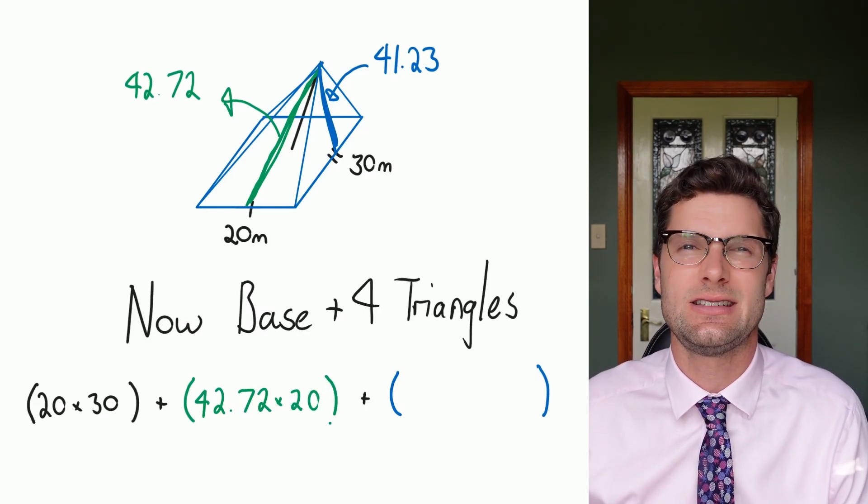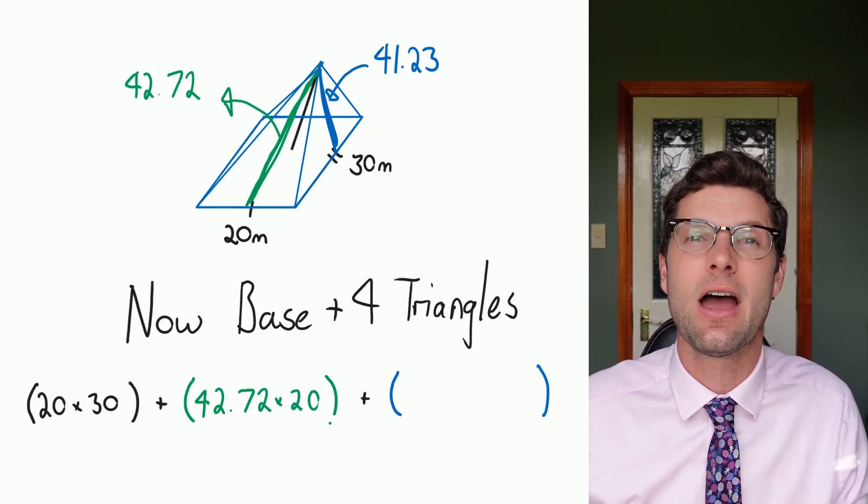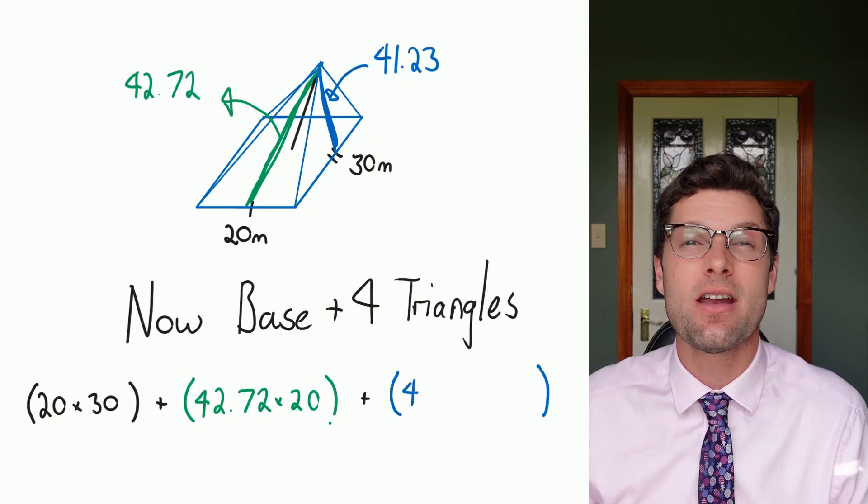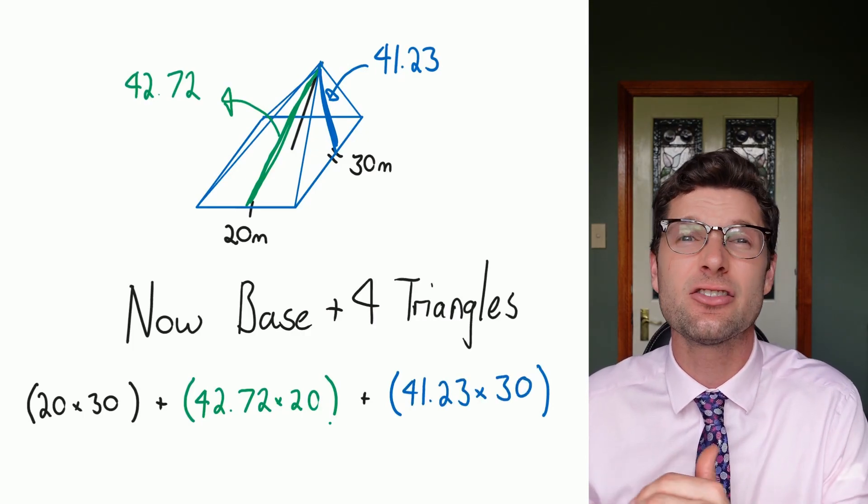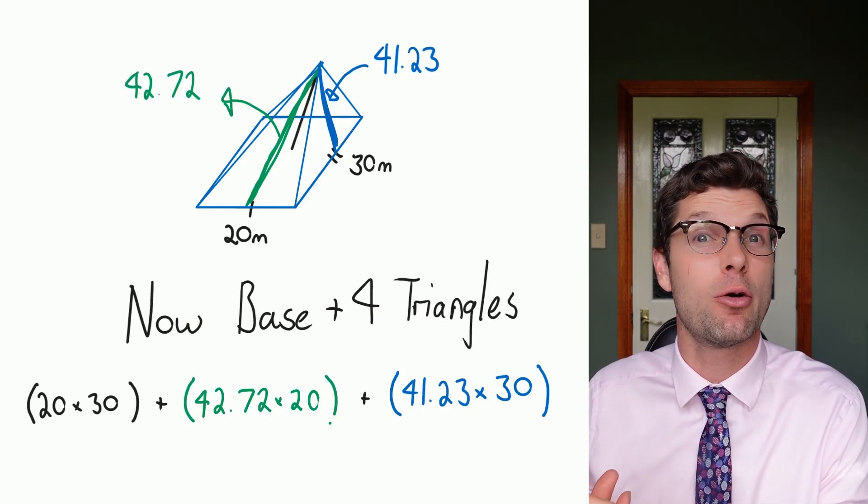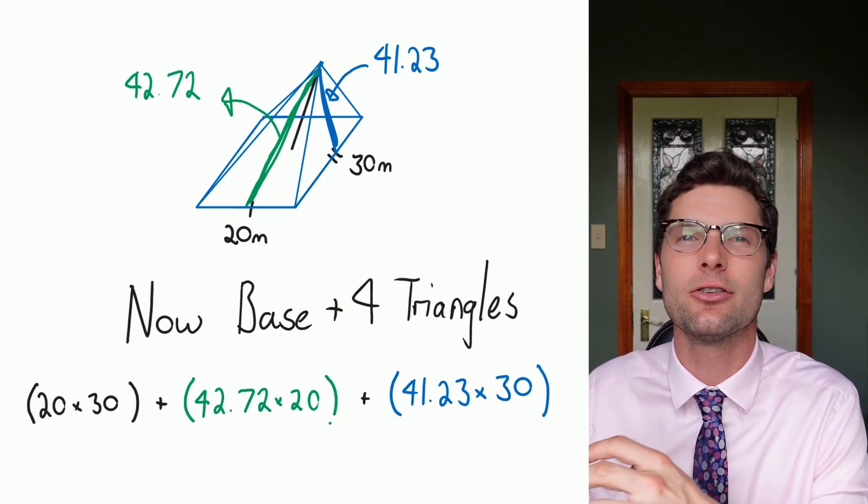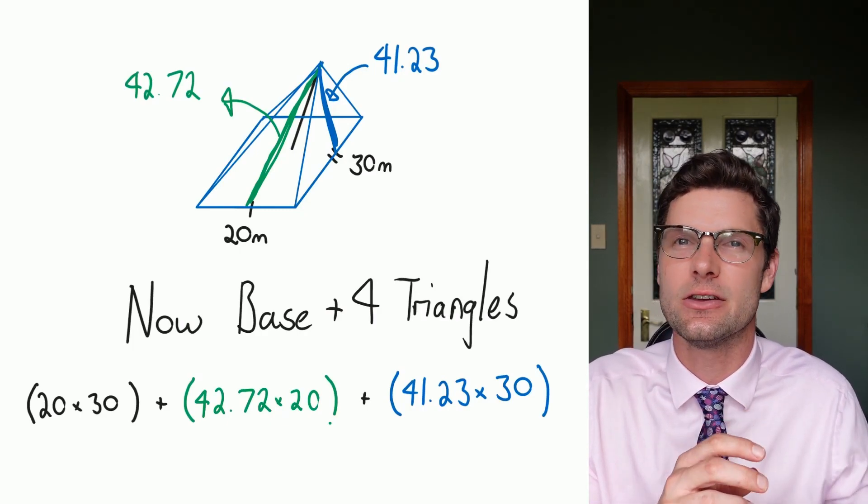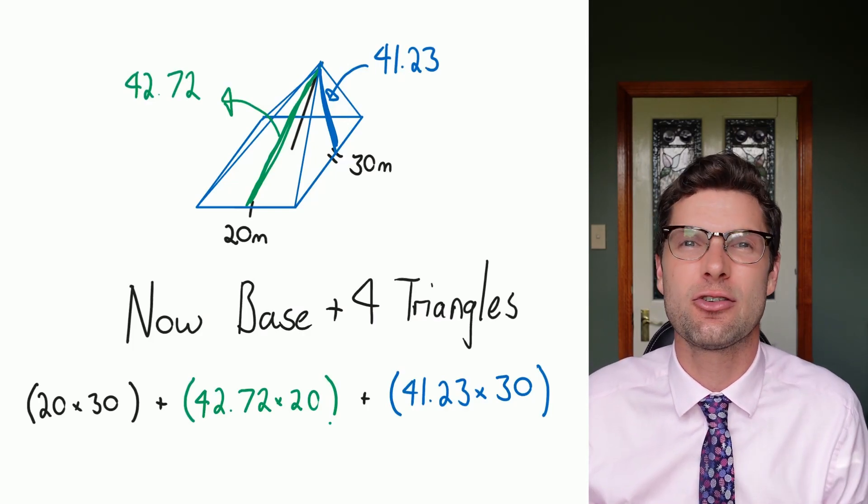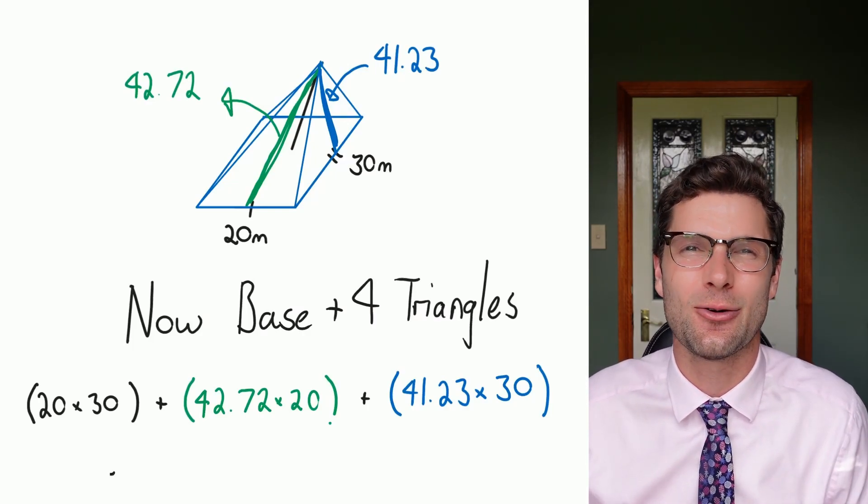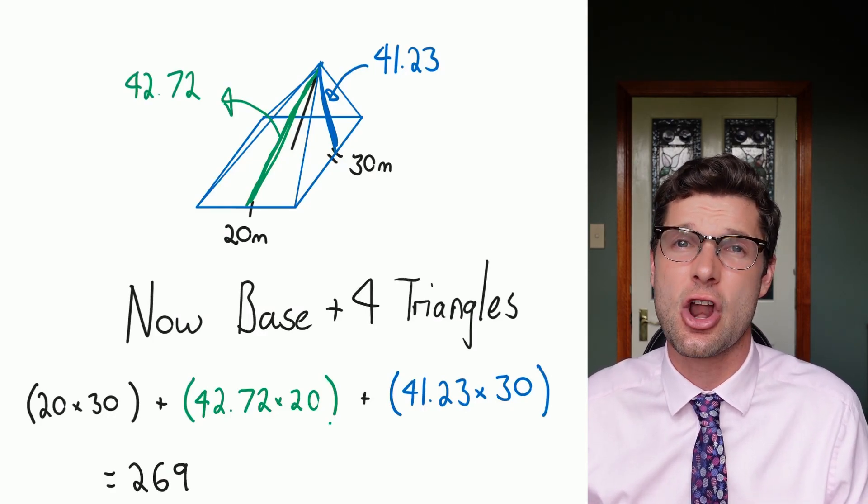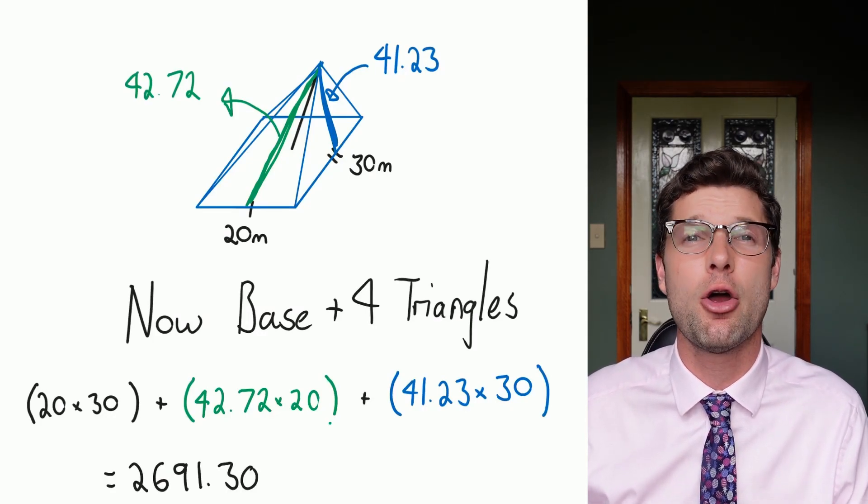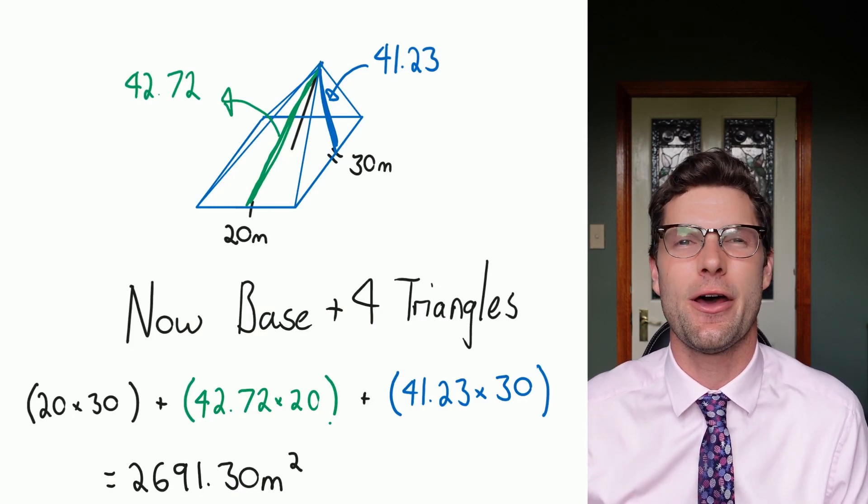So this is just 42.72 multiplied by 30 for the green one, and then for the blue one I have to do 41.23 multiplied by 30. As long as I put all of those in, again remembering that because I've got the two triangles I can get rid of the half and the two, they cancel out, you just throw that into your calculator and you're going to get the correct answer. So if I throw this into my calculator I get the answer of 2691.30 meters squared, and that's my final answer.